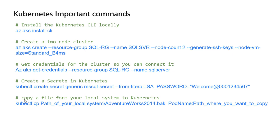The last command on this slide is going to copy a file from your local system to the Kubernetes pod. This is kubectl cp - that means copy - followed by the path of your local system. If it is a Unix-based system, it will be a slash path; if it is Windows, it will be C-colon or D-colon. Then comes the pod name, which is unique when you create a pod, followed by a colon and the path where you want to copy this file. We will see this command in our demo.